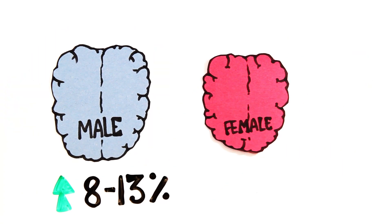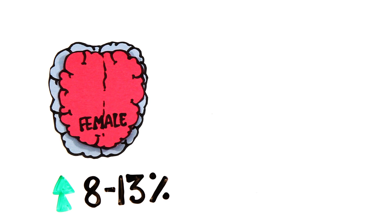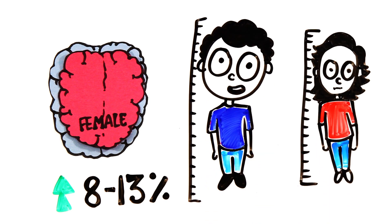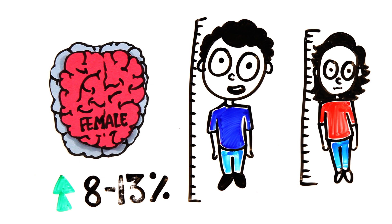Early studies showed that male brains are 8-13% larger in volume than female brains. However, this has since been attributed to differences in body size. Women's brains have more gyrification or brain folding, and as a result, a greater cortical surface area.